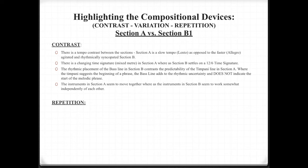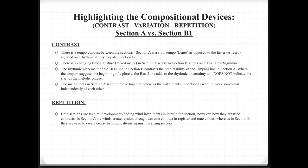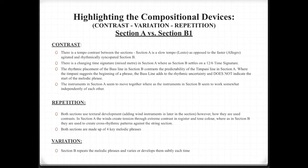The instruments in section A seem to move together, whereas the instruments in section B seem to work somewhat independently of each other. Repetition: both sections use textual development, adding wind instruments later in the section. However, how they are used contrasts — in section A the winds create tension through extreme contrast in register and tone colour, whereas in section B they are used to create cross-rhythmic patterns against the string section. But both sections are made up of four key melodic phrases. And finally, variation: section B repeats the melodic phrases and varies or develops them subtly each time.